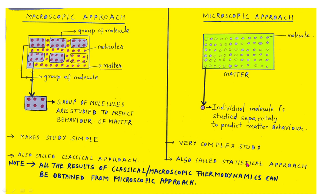The behavior of all the molecules is studied in the microscopic approach. In the macroscopic approach, it is a very easy study — studying the group of molecules is much easier than studying each and every molecule individually, because matter is made of an infinite number of molecules, so studying every molecule is very difficult. Therefore, the macroscopic approach is easier than the microscopic approach.